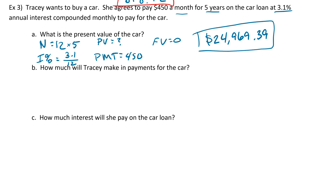Part B: how much will Tracy make in payments for the car? By the way, for those of you using the handheld calculator, you should have gotten $24,981.73 — again just because of rounding error. For the rest of the problem I'm going to use $24,969.39 so we don't have to do everything twice.